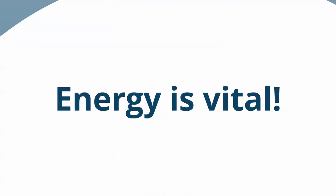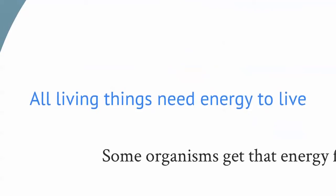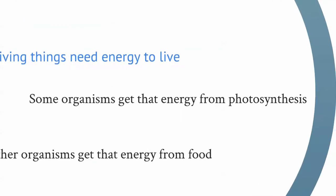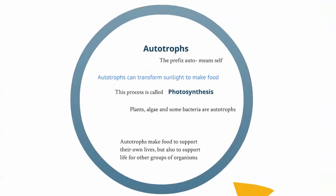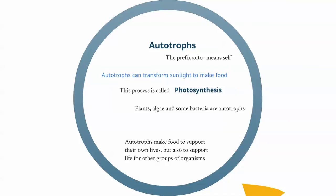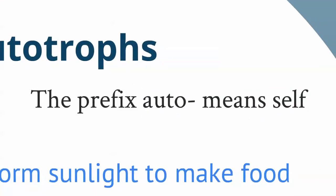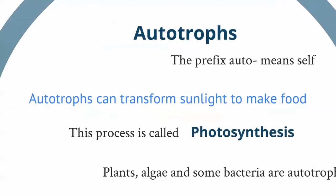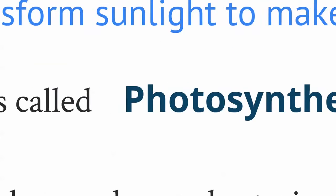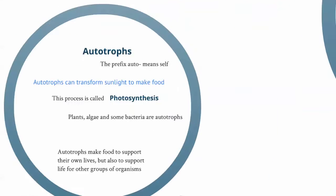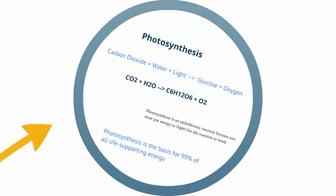Energy is vital to the world we live in. All living things need energy to live. Some organisms get that energy from photosynthesis. These are called autotrophs — the prefix auto means self, so they make their energy or food themselves. Autotrophs can transform sunlight to make food, and this process is called photosynthesis.